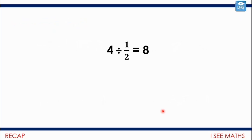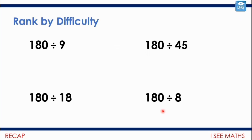And then we've got examples like 4 divided by one half. If we understand this as 'how many halves in 4,' you actually just know it's 8. Now, have a look at these questions here and rank them by difficulty. Which one's the hardest? Which one's the easiest? Why? How do you calculate them? Do you do it in the same way or different ways? Pause the video and see what you come up with.